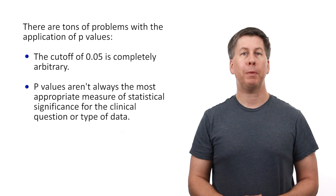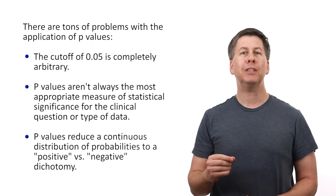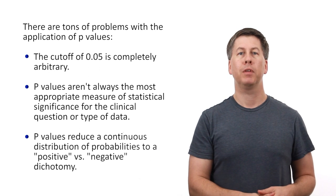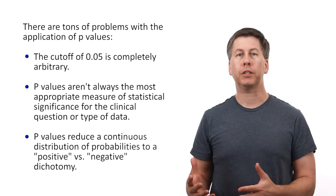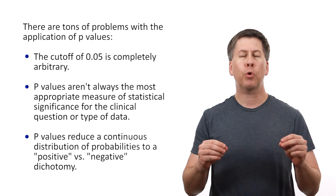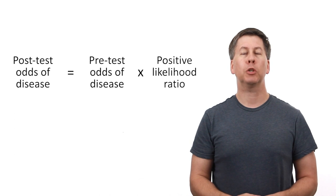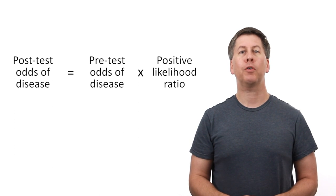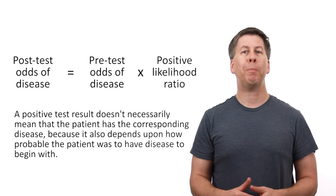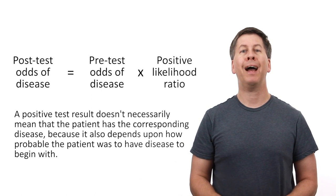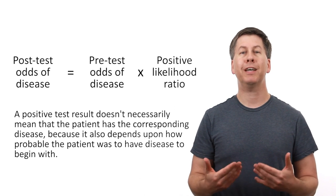However, the most fundamental problem with how clinical medicine uses p-values is that it reduces a continuous distribution of probabilities to a positive versus negative dichotomy. This results in physicians uncritically accepting or rejecting trials whose results are much more nuanced. Most physicians are familiar with this relationship, the odds of a disease being present after a test has been performed is equal to the odds of its presence before the test multiplied by the likelihood ratio from the test. In other words, a so-called positive test result doesn't necessarily mean that the person has the corresponding disease because it also depends on how probable the patient was to have the disease to begin with. An analogous relationship exists for interpreting studies.